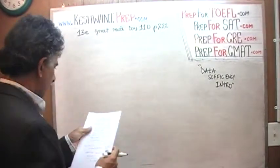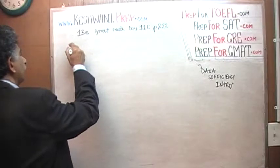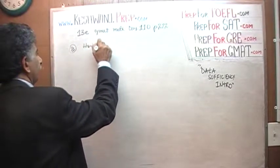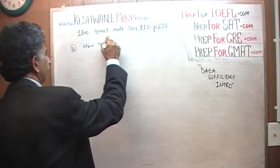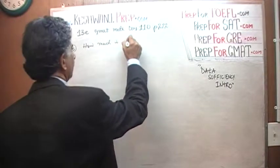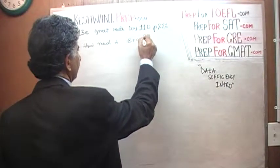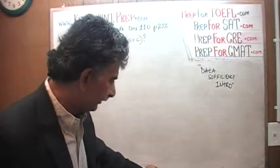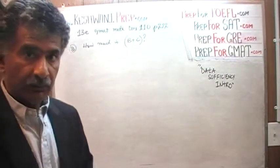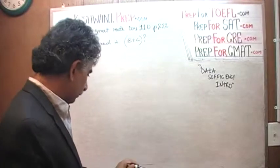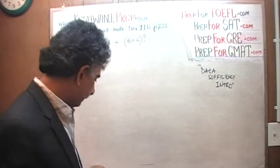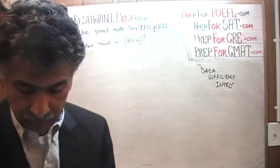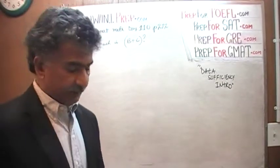The question simply is: how much is b plus c? That is all they are looking for — what is the value of b plus c? Notice they are not looking for the individual values of b and c. Nobody is asking what b is or what c is individually. They are asking what is their sum.